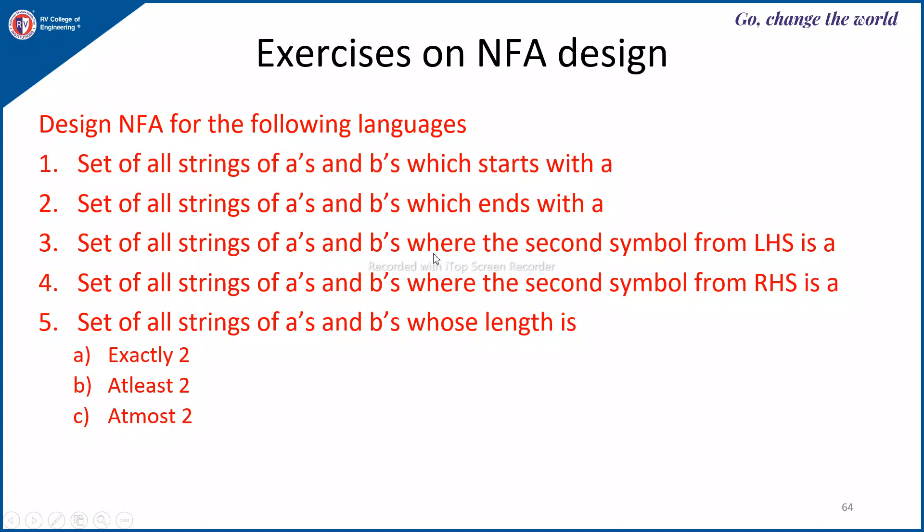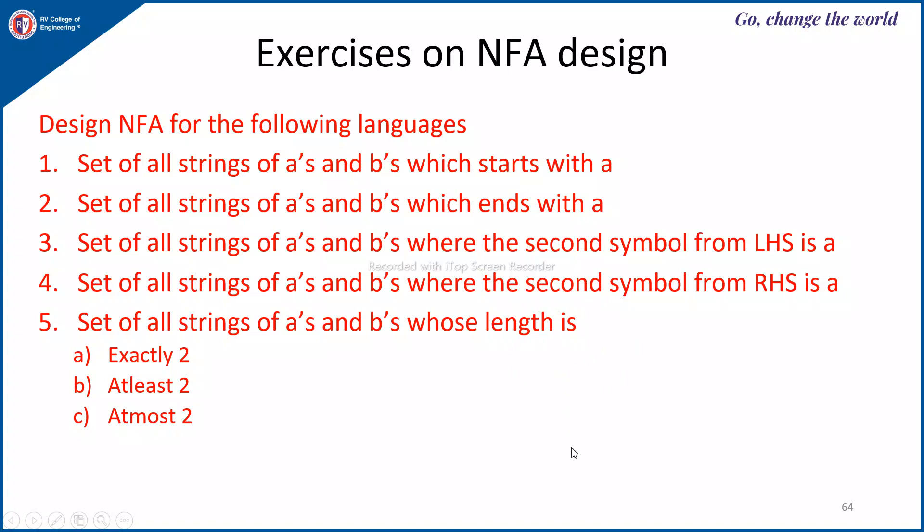Next is the set of all strings of A's and B's where the second symbol from the left is A. For the first symbol whether it is A or B you change the state, and for the second symbol from the left if it is A you go to the next state which is the final state, and for that final state you have a self loop. Likewise you can try the remaining construction of NFA problems.